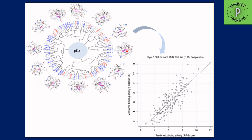The PDB-bind database contains protein structures with their ligands along with protein-ligand binding affinity data. This data is taken and an ensemble of trees is generated — the highest number of trees P is 500. A conclusion is generated from each tree, and an average of these conclusions is taken to get the final single result. Based on this, a correlation analysis graph is produced, comparing predicted ligand binding affinity against measured binding affinity from the PDB-bind database.